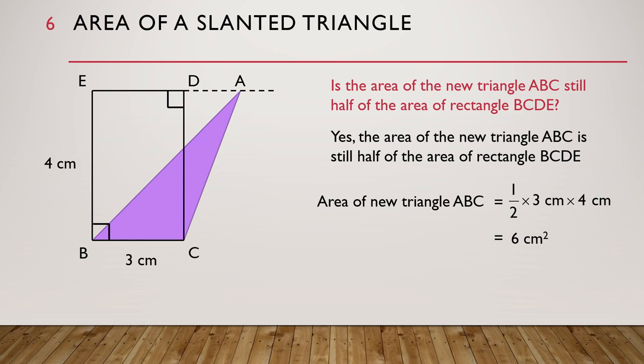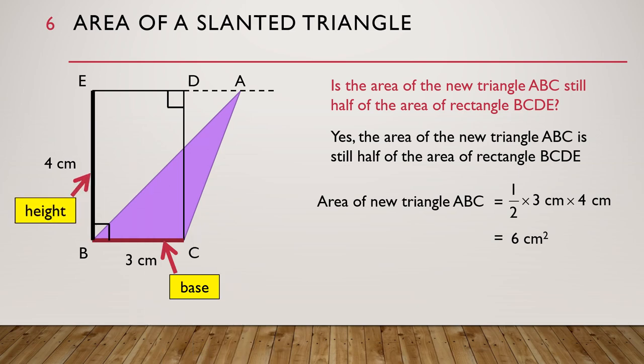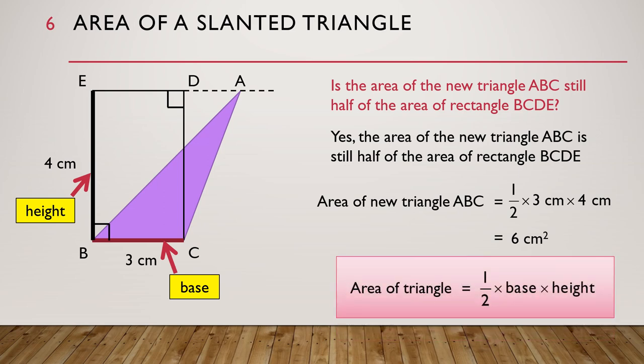Just like the triangle before, this common side BC that triangle ABC shares with the related rectangle BCDE is known as the base of triangle ABC. So we still have our formula: the area of the triangle is equal to half times the base times the height of the triangle.